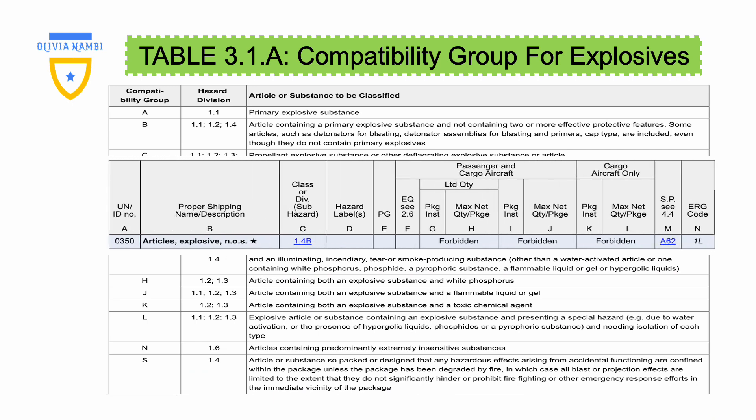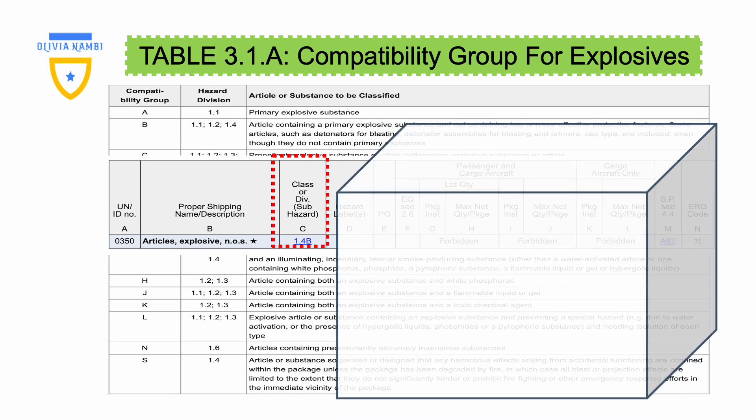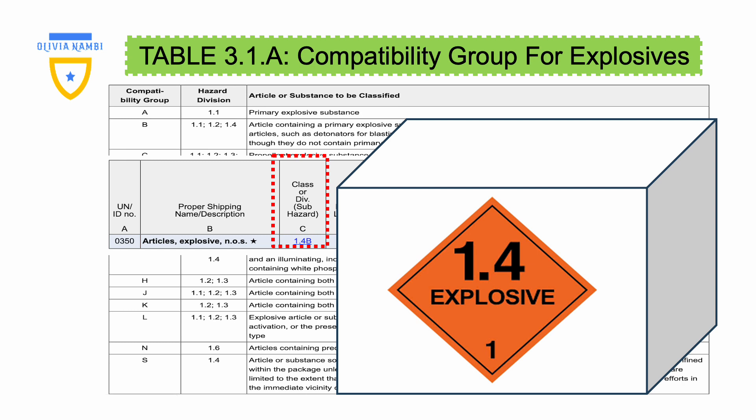When you go to Section 4, which is identification, column C gives us the class or division, and then in brackets they give us the subsidiary hazard. In the case of explosives, column C will always have a division and its compatibility group. As we can see in our case, we have division 1.4B.